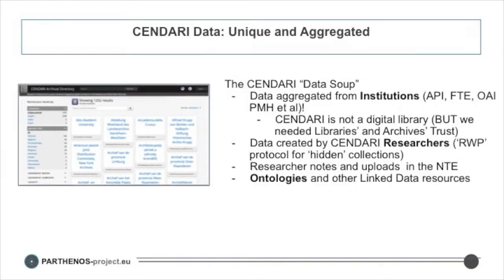The next asset class was the Sendari data. Many research infrastructures, particularly in Europe, will have unique and aggregated data as part of what they do. We always viewed our data as what we called a 'data soup' — a lot of different kinds of data coming from institutions, researchers, and different formats. We had metadata, full text, and ontologies in our linked data resources. It was quite a heterogeneous data environment.